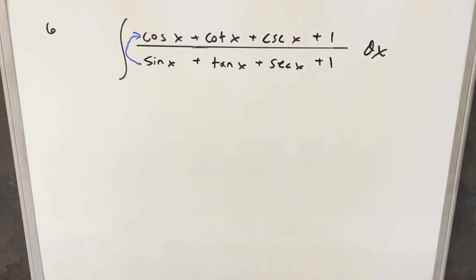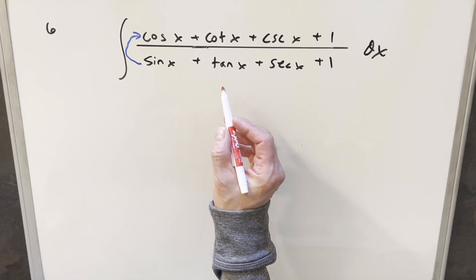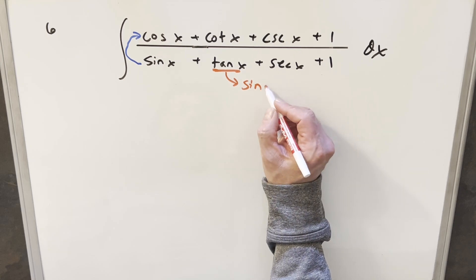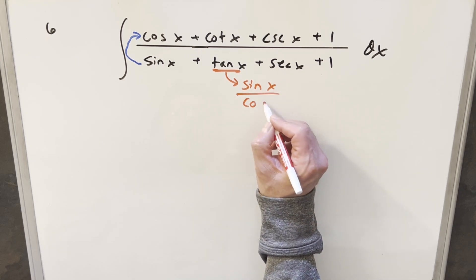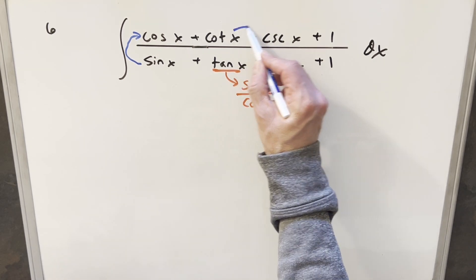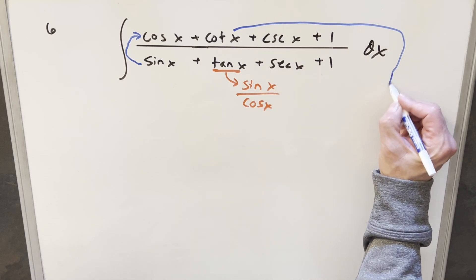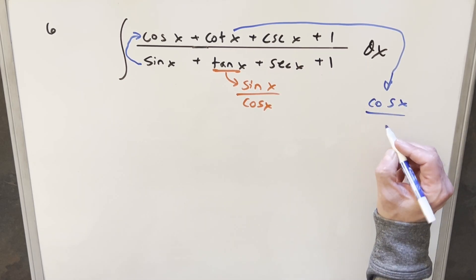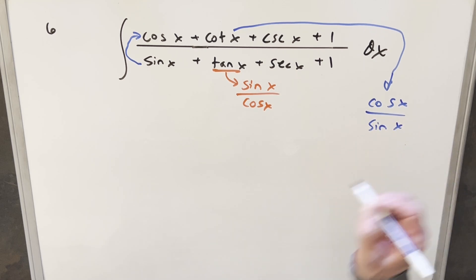I think what I need to do instead is somehow factor this or rearrange the trig functions. What I want to focus on, I think, is if we look at tan x, I can write it in terms of sines and cosines, and I can kind of do the same thing with cotangent. So cotangent is just the reciprocal. Cotangent is going to be cosine x over sine x.